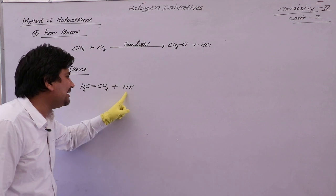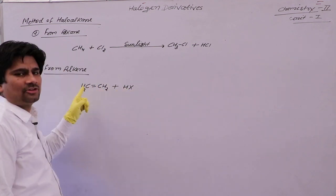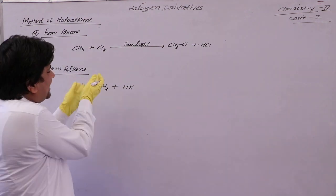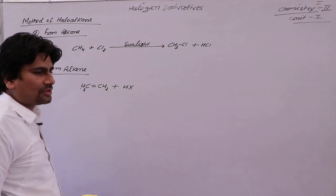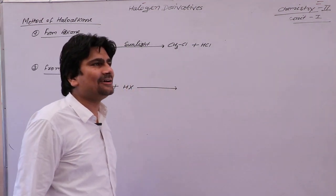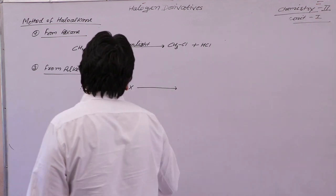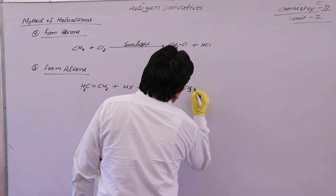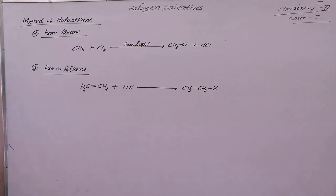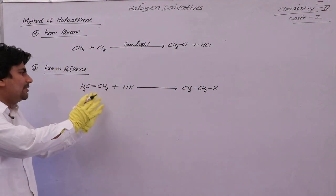Here, H can be added on either side and X can also be added on either side. If you add both ways, the two products that will form will be the same. H⁺ and X⁻ — you studied in 11th class which reaction this is: electrophilic addition reaction. The product is CH₃CH₂X.